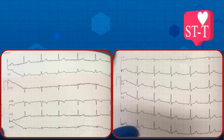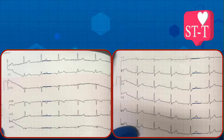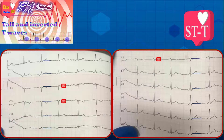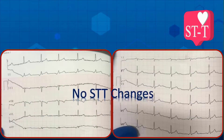Next part is examining ST-T changes. There is no obvious ST elevation or depression. The T waves are positive in all leads except AVR, D3, and V1. As stated in episode number two, inverted T wave is considered a normal finding in D3. So there are no abnormal ST-T changes in this strip.